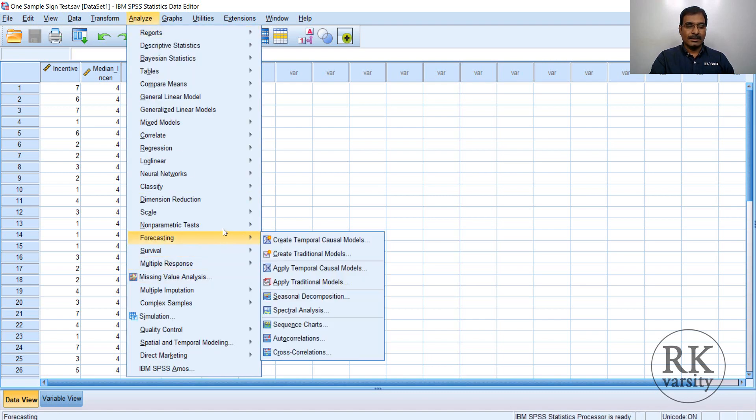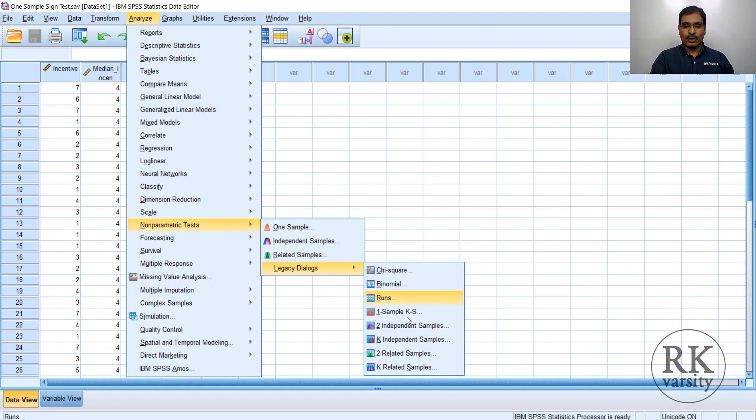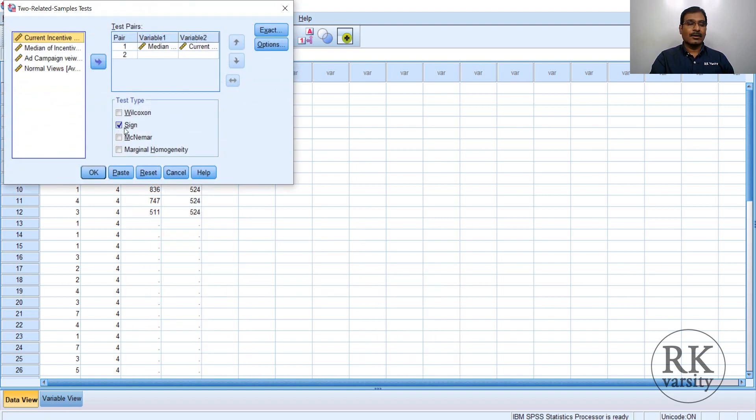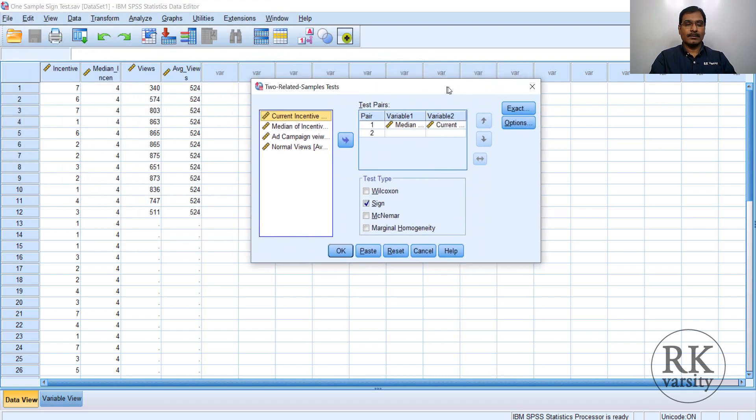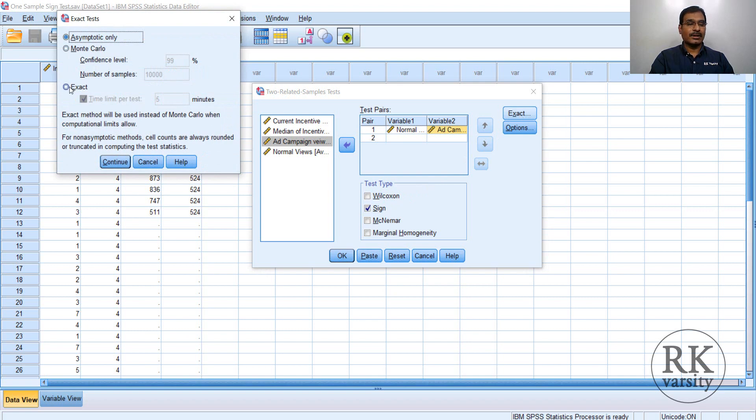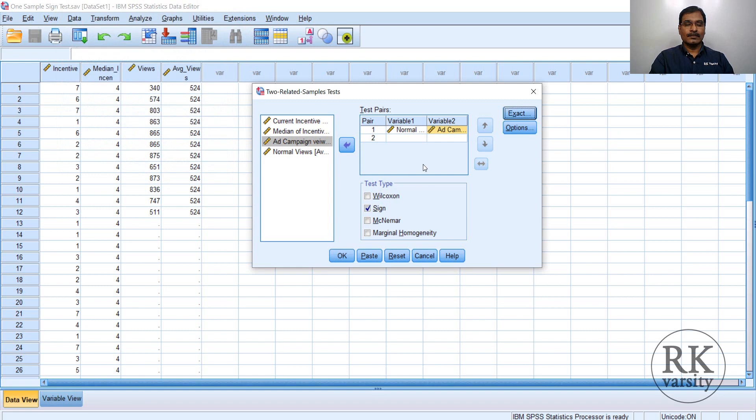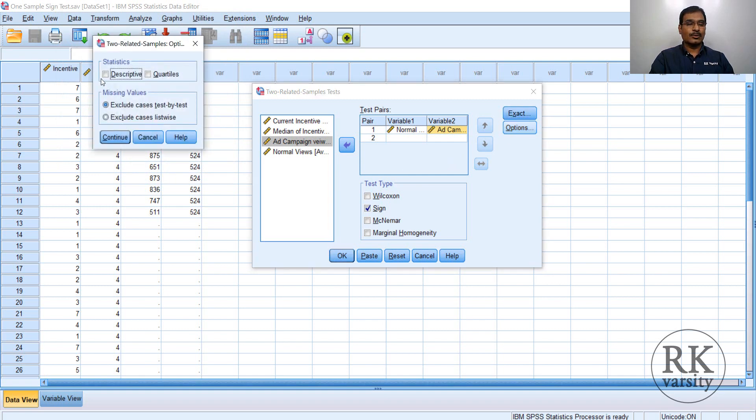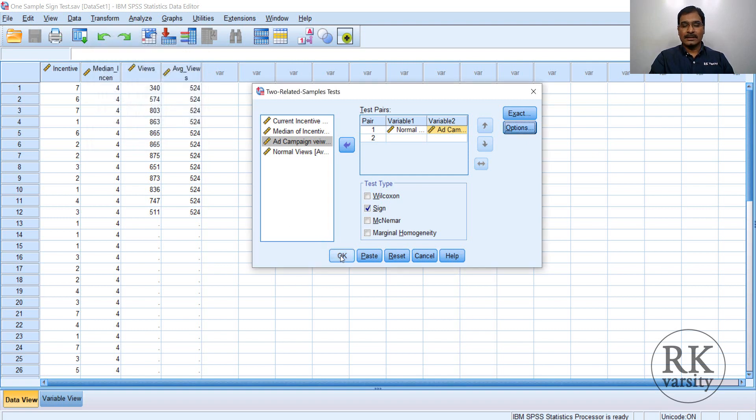To run one sample sign test, click Analyze, then Non-Parametric Tests, Legacy Dialogues, and two related samples. Already you have values here previously calculated. To remove this, simply click Reset. Now choose the normal views and send this to variable 1. Then ad campaign, send this to variable 2. Then uncheck Wilcoxon, check sign test. Then click Exact, select exact, then click Continue. And then Options, choose both the descriptive statistics as well as quartiles, then click Continue. Then click OK.